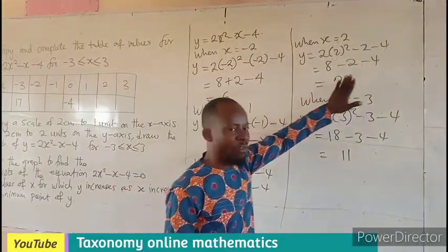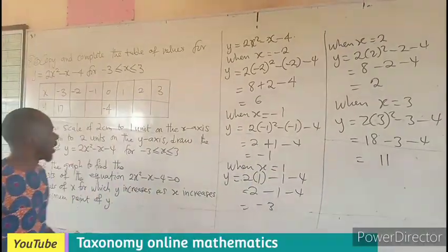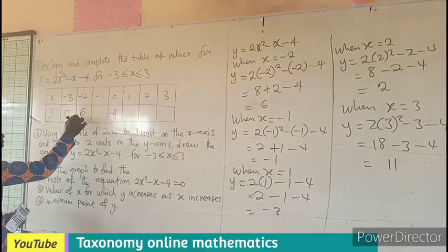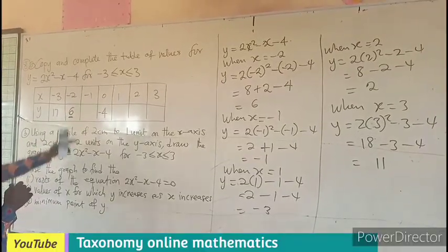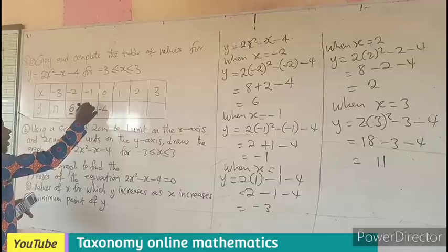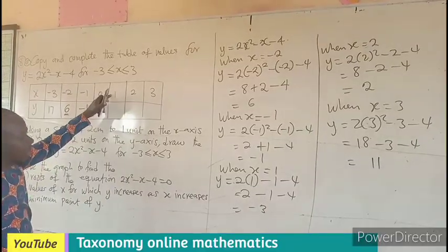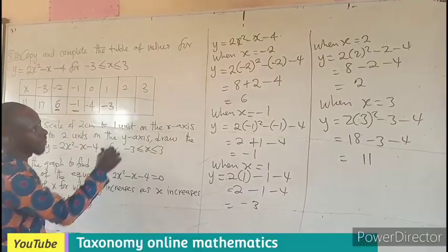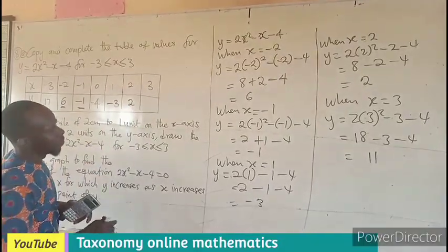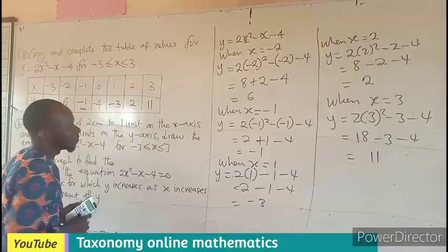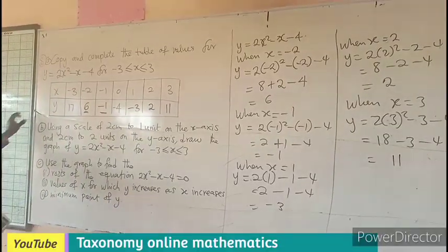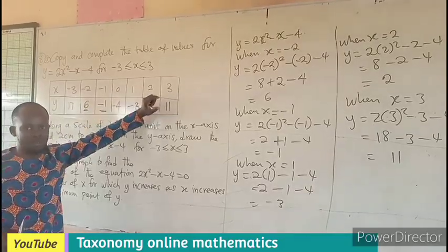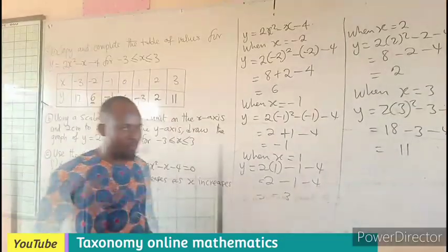Let's record the values. For x = -2, y = 6. For x = -1, y = -1. For x = 1, y = -3. For x = 2, y = 2. For x = 3, y = 11. We will use these pairs to plot the graph. Let's see how this looks on the graph paper.